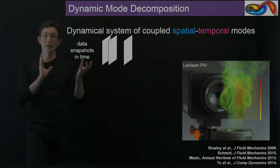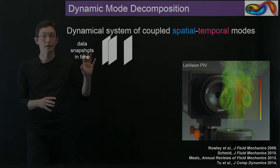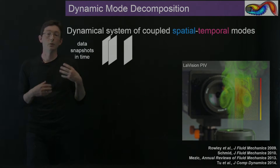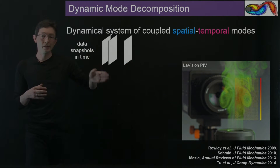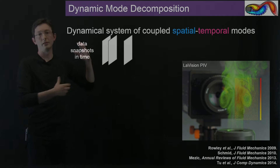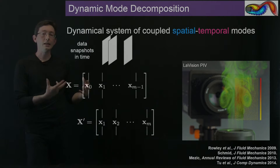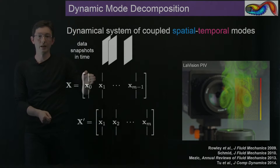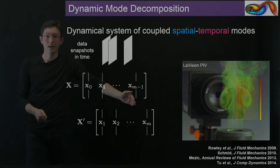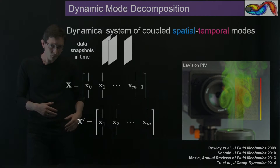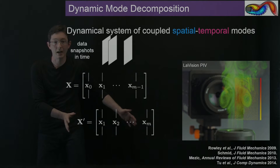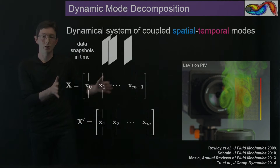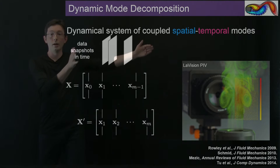The DMD method is essentially a data-driven method. It works equally well with data from experiments, simulations, or historical records, as long as our data is time-resolved. We have snapshots of data in time — either velocity fields or vorticity fields. We take these snapshots and reshape them into tall vectors: x0 at time t0, x1 at time t1, all the way up to x at time tm-1. I create this data matrix of snapshots, and then a time-shifted matrix X prime, which has all of these snapshots of data at one time in the future.